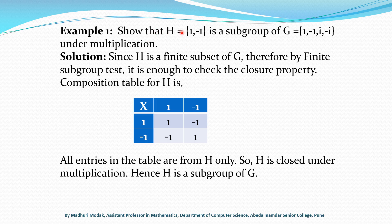Clearly H is a subset of G, and since H contains 1 it is non-empty. So we just check the closure property. To check closure for a finite set, we prepare a composition table, as we have seen in Unit 2. We write the members of H — 1 and -1 — as the heading row and heading column, and the operation is multiplication.